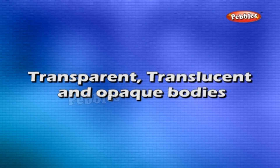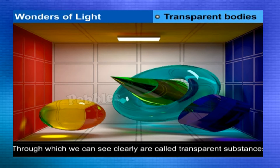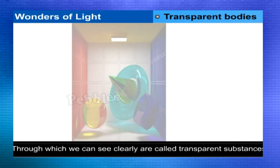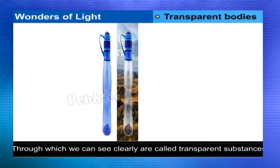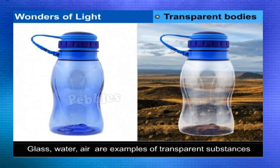Transparent, translucent, and opaque bodies: Substances which allow light to pass through them easily and through which we can see clearly are called transparent substances. Glass, water, air, and cellophane paper are examples of transparent substances.